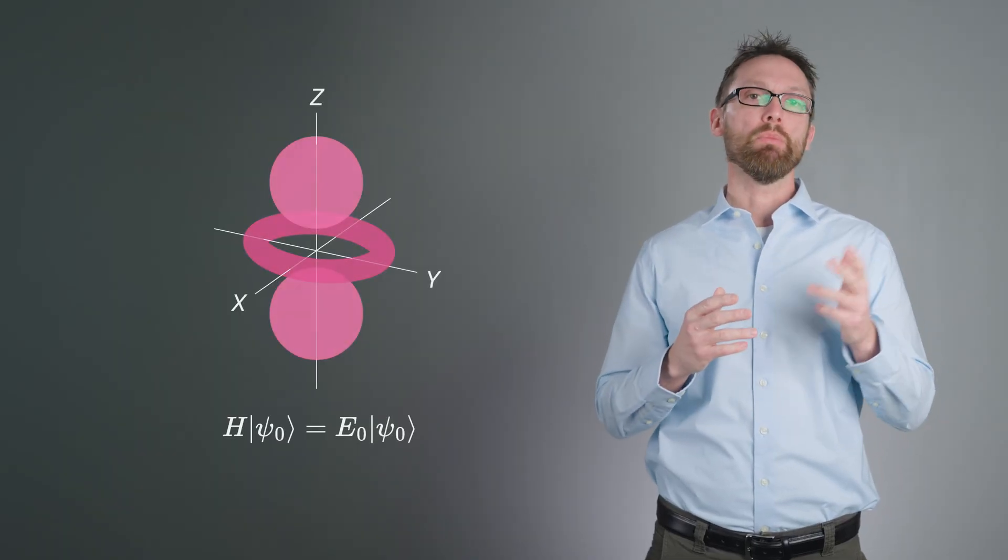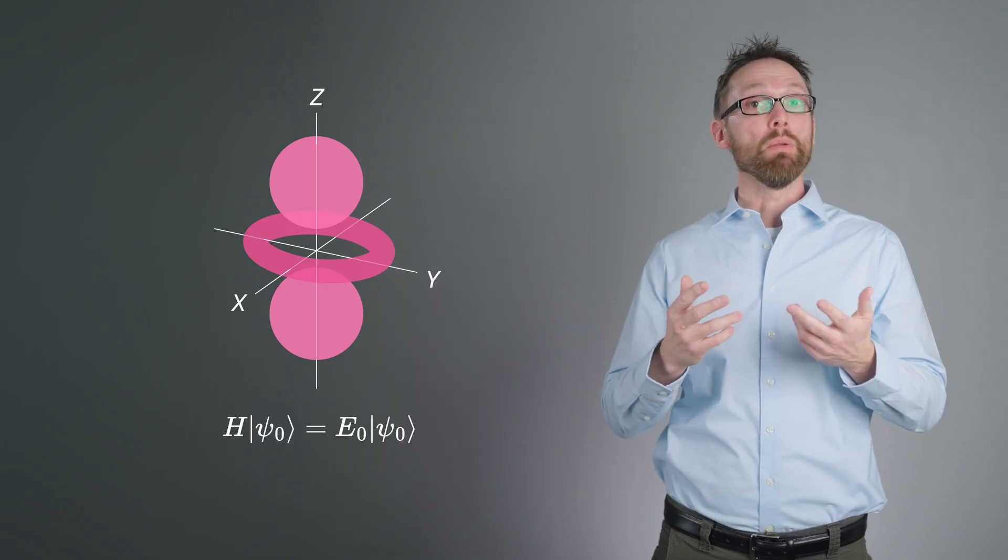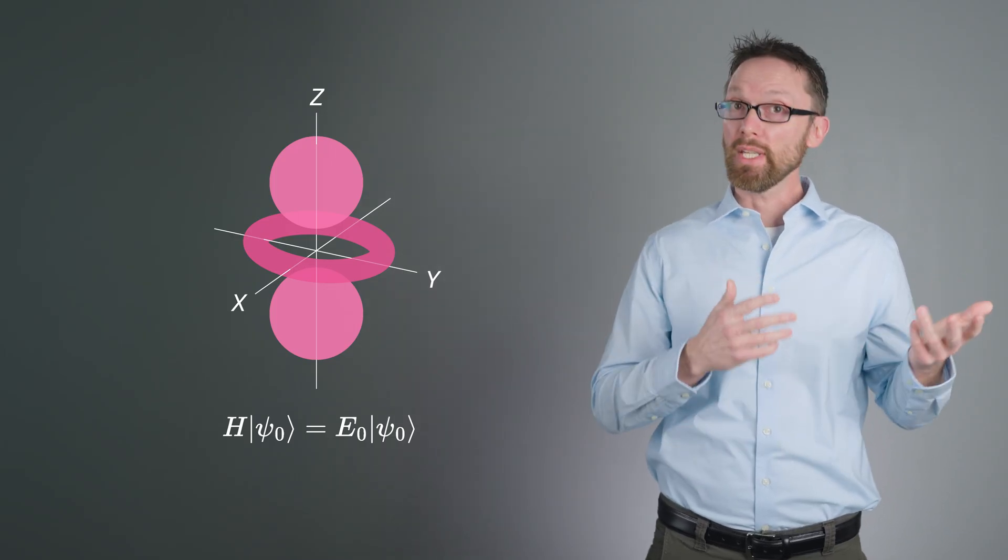Let's outline the problem we want to solve and the general approach before addressing how quantum plays a role. We can cast many optimization problems critical to science and industry as matrix eigenvalue problems. Commonly, you want the minimum eigenvalue of your matrix and the eigenvector that corresponds to it. The matrix H could be a Hamiltonian describing the energy of a physical system, and the minimum eigenvalue would be the ground state energy, E0, and the eigenvector would be the corresponding quantum ground state, often denoted ψ₀.